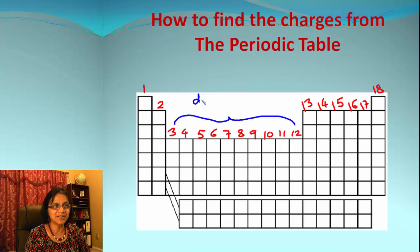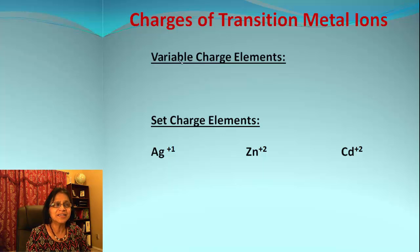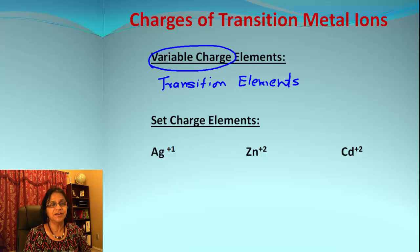These are d-block elements or we call them as transition elements, and these are little weirdo elements. So these are the ones which always show variable charge. The charge may not be fixed for all of them.